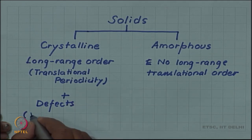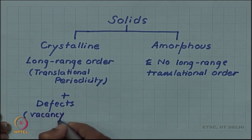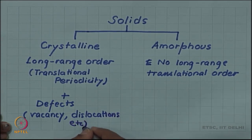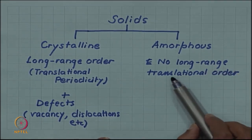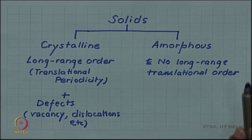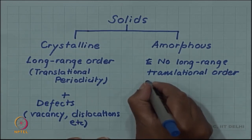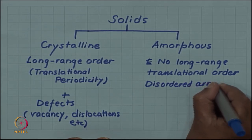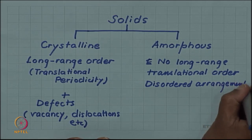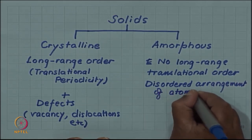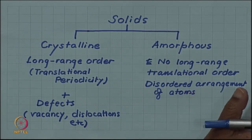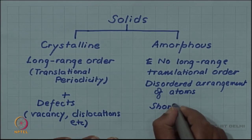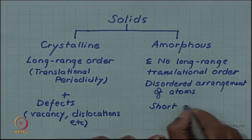Defects can be vacancies or dislocations, etc. Similarly, perfect disorder is also an idealization. When we say no long range translational order, or disordered arrangement of atoms, this disorder also is not perfect. In fact, amorphous phases have what is called short range order — they are not totally random; they have a short range order.